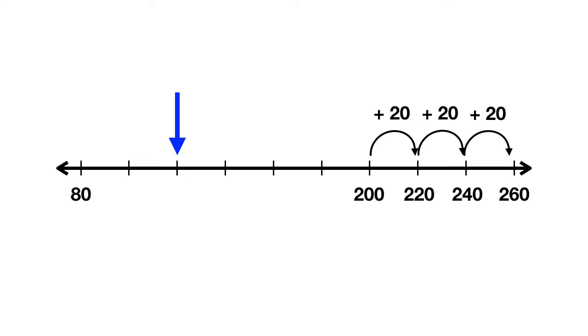So one way you could have found what the arrow was pointing at is started at the 80 and moved over one dash and added 20. Now you're at 100. Then you could have moved over again, added 20 more. Now you're at 120. This arrow was pointing at 120.